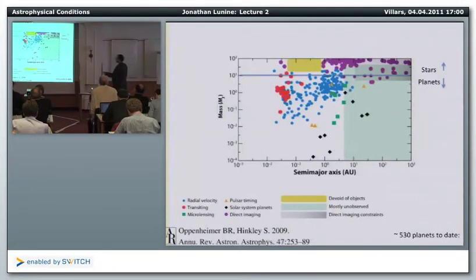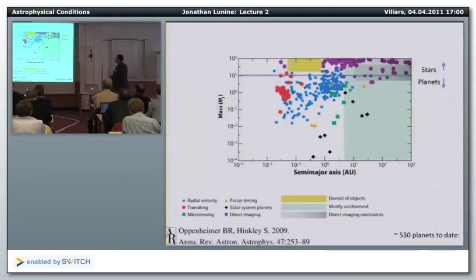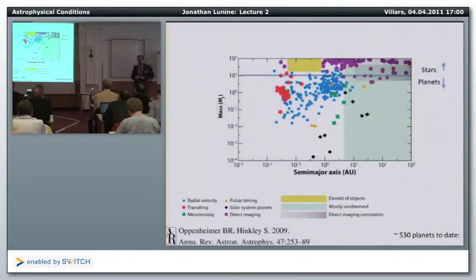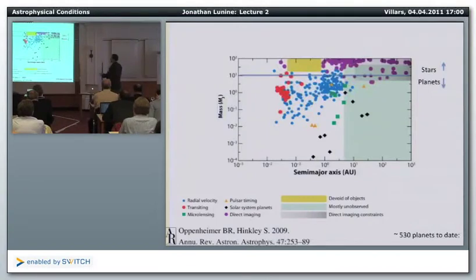The magic line at ~13 Jupiter masses starts the debate about what is a planet versus a brown dwarf. A brown dwarf is a star that does not burn hydrogen. The boundary between main sequence stars and planets is ~80 Jupiter masses — the threshold for fusing hydrogen into helium. There's another limit at 13 Jupiter masses where deuterium can undergo fusion, requiring lower temperatures and pressures.